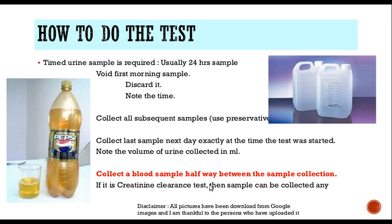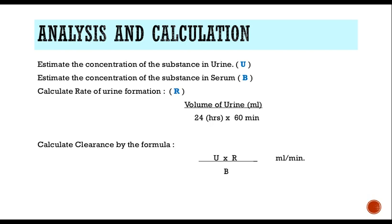If creatinine clearance is the test being done, the blood sample can be collected anytime because the creatinine level stays constant throughout the day. So what do I have? I have a 24-hour urine sample and I have a blood sample. The first important thing is we have to measure how much quantity of urine has been collected, and this has to be expressed to the nearest ml — not like 'half a Pepsi bottle, this is 2 liters.' We have to actually measure it in a measuring cylinder and note the volume of urine collected in 24 hours.